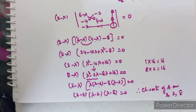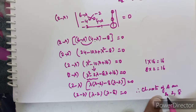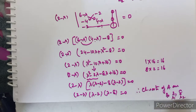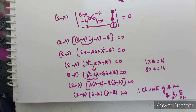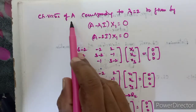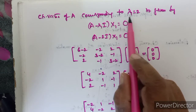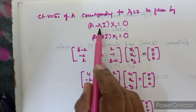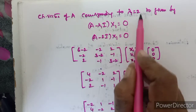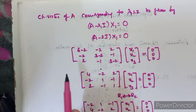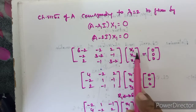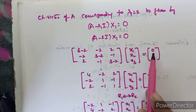Now we find the characteristic vectors. We have λ₁ = 2 (repeated) and λ₂ = 8. For λ₁ = 2, the characteristic vector satisfies (A - 2I)X₁ = 0, where X₁ = (x₁, x₂, x₃)ᵀ and the right-hand side is the null matrix (0, 0, 0)ᵀ.